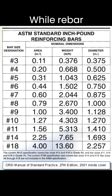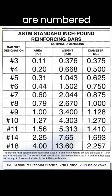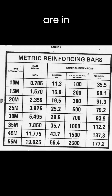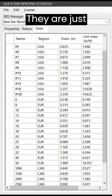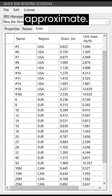While rebar is always classified by section diameters, imperial bars are numbered in one-eighth inches and metric bars are in millimeters. They are just different, and the conversion is only approximate.